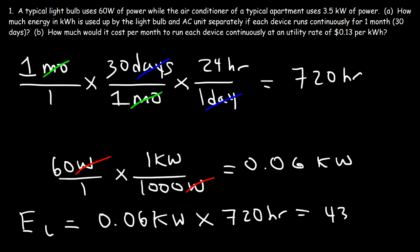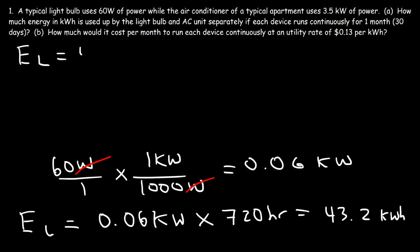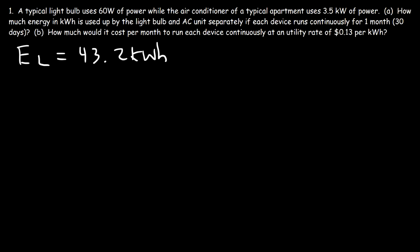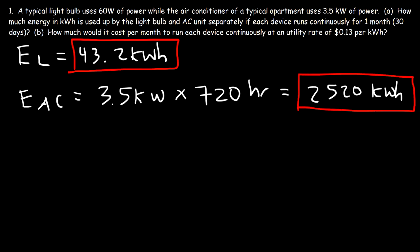That comes out to about 43.2 kilowatt hours — that's the energy used by the light bulb in a single month. Now what about the AC unit? It uses 3.5 kilowatts, and one month is 720 hours, so it uses 2520 kilowatt hours. Those are the answers to part A — that's how you find how much energy is consumed by these devices in a single month.